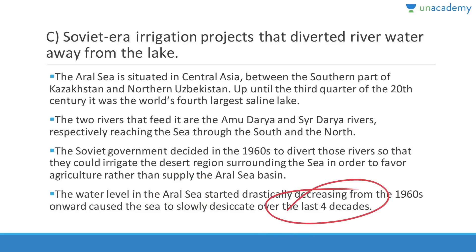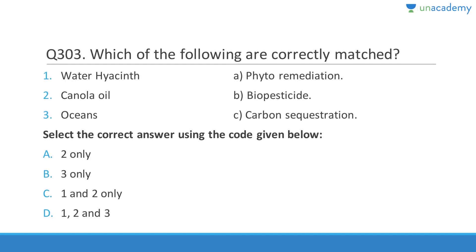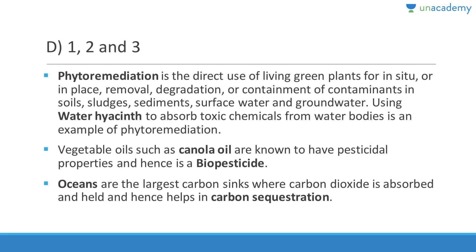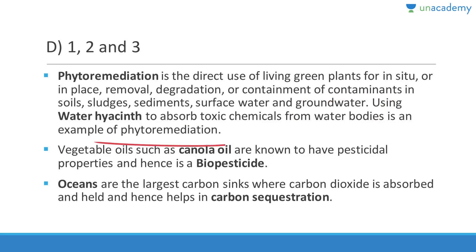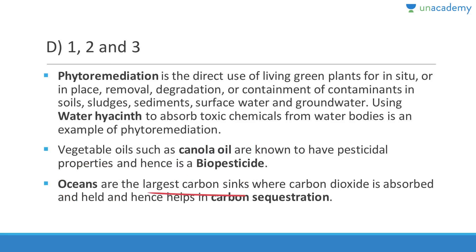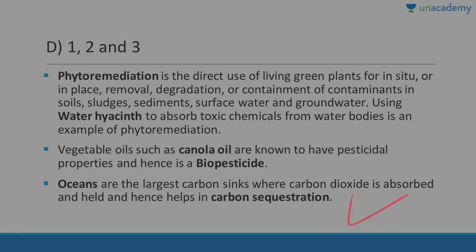Question 303: Correctly matched pairs include water hyacinth with phytoremediation, canola oil with biopesticide, and oceans with carbon sequestration. Answer is D (1,2,3). Phytoremediation is the direct use of living green plants for in-situ removal of contaminants; water hyacinth absorbs toxic chemicals from water bodies. Canola oil has pesticidal properties, making it a biopesticide. Oceans are the world's largest carbon sinks, aiding carbon sequestration.